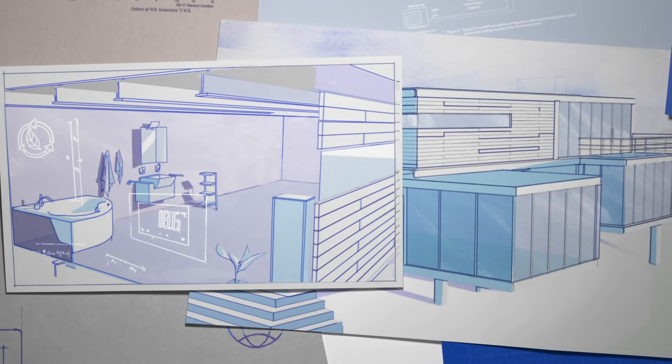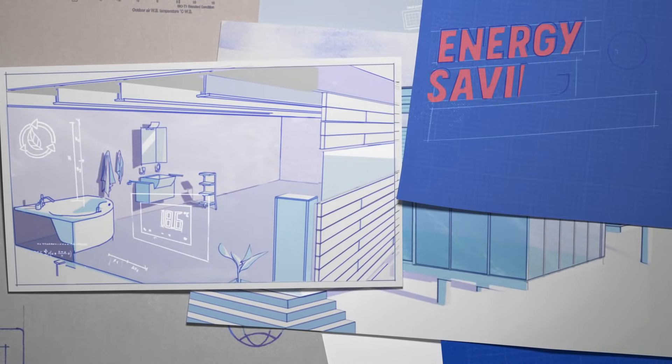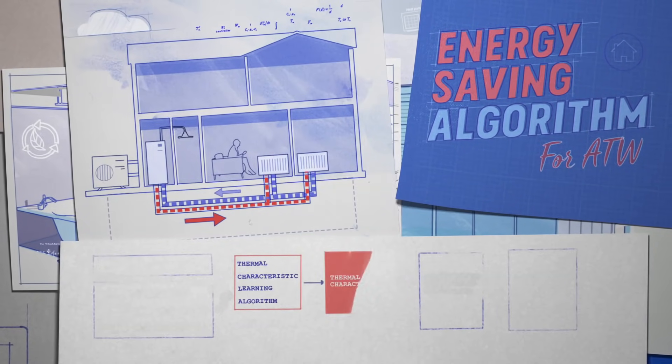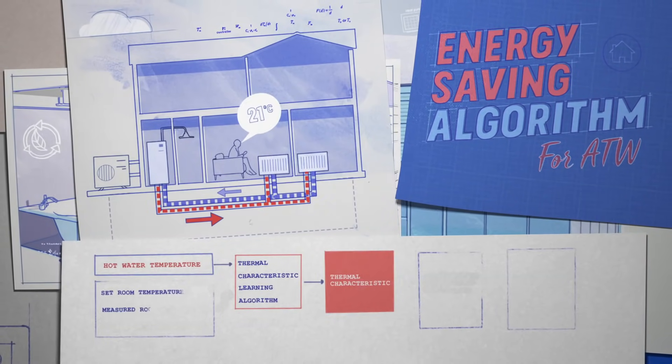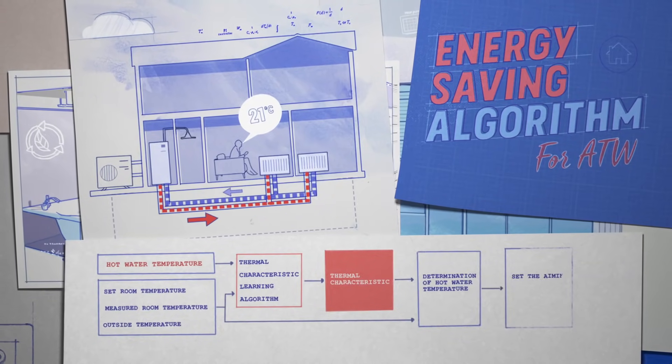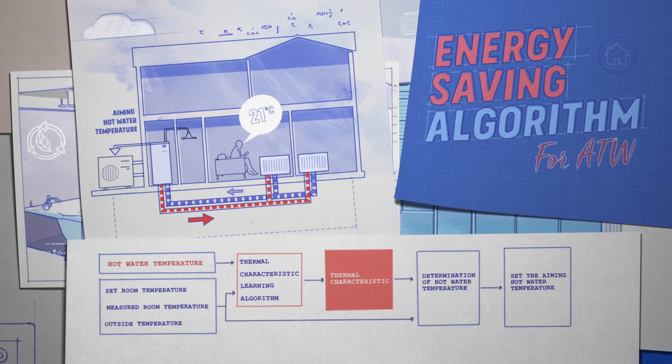Then we take energy efficiency up another notch with our energy-saving algorithm. It learns the thermal characteristics of your home, from hot water temperature to room temperature and outside temperature, and uses that to send the perfect water temperature to match the thermostat.